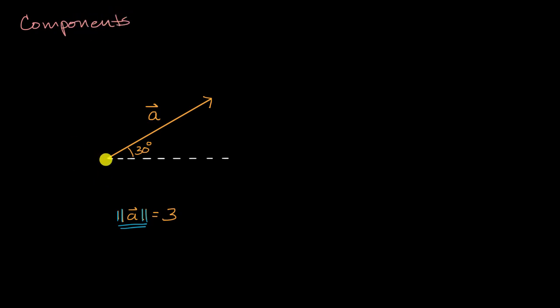And the way that we're going to do it is we're going to think about the tail of this vector and the head of this vector. And think about as we go from the tail to the head, what is our change in X? And we could see our change in X would be that right over there. We're going from this X value to this X value.